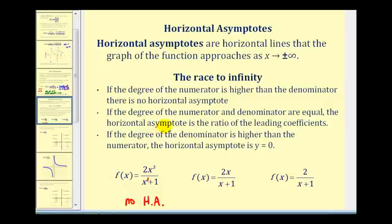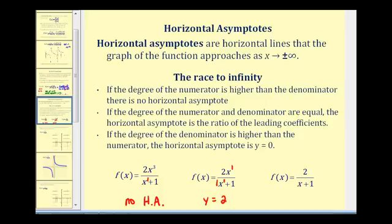If the degree of the numerator and denominator are equal, the horizontal asymptote will be the ratio of the leading coefficients. In our second example, the numerator and denominator both have degree one, and the ratio of the leading coefficients is two over one. Therefore the equation of the horizontal asymptote is y equals two.